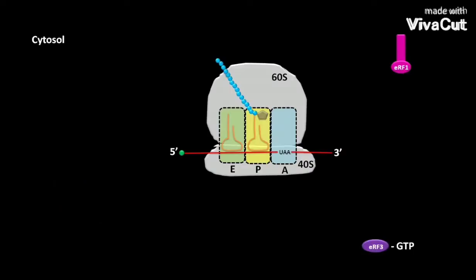In the cytosol of a eukaryotic cell, two types of eRF are present. They are eRF1 and eRF3. The eRF stands for eukaryotic release factor.